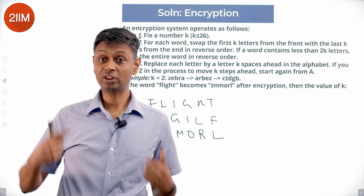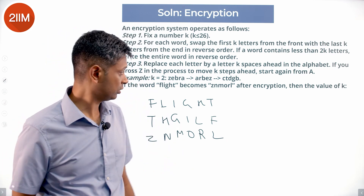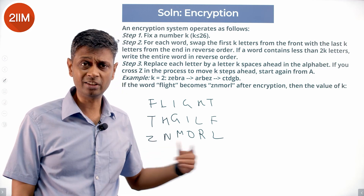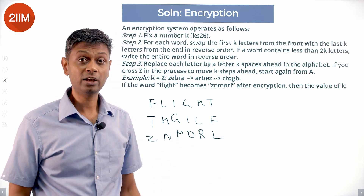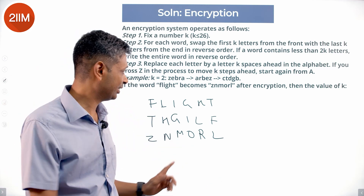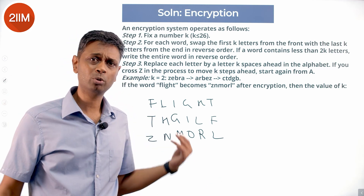Since the alphabet is cyclic, k equal to 32 would also work — it wraps around and produces the same result after one extra full cycle.